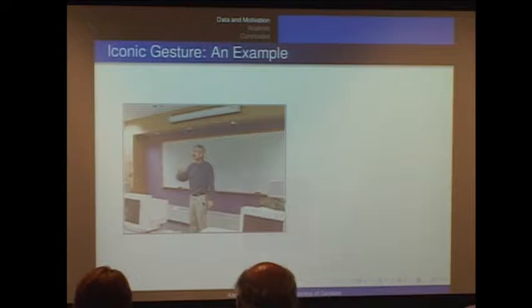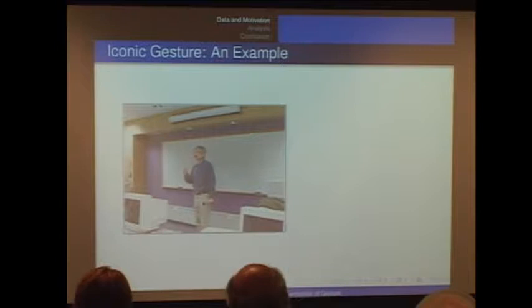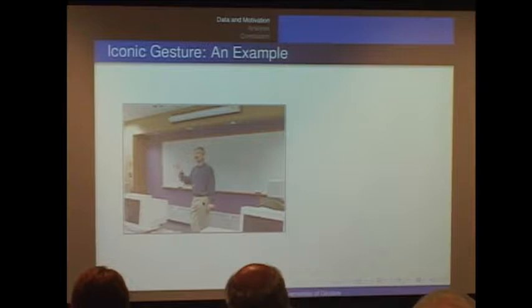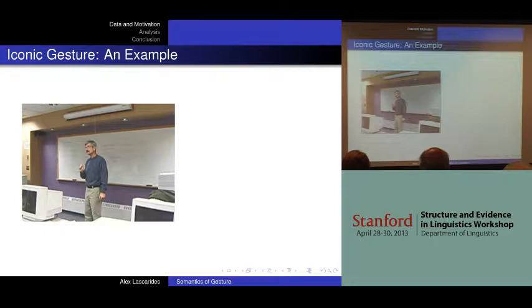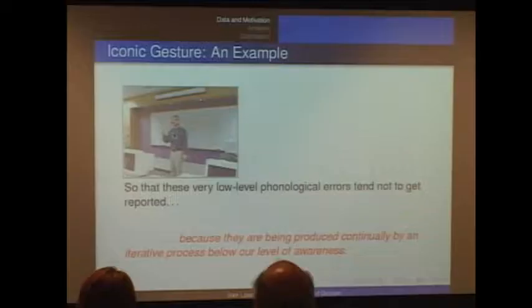So there would be very low-level logical errors that tended not to get reported. One thing you could do is spend hours and hours exhausting it with those who have been sure that you really get all the speech errors — allow two hundred coders to go through. I'm going to splice that video up and give you a rough paraphrase of what I think the gesture is contributing to this overall discourse. Here's the first extract.